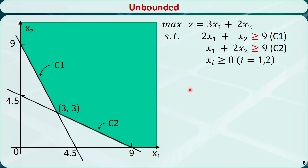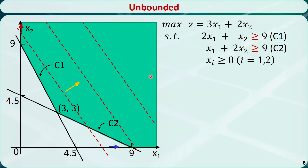In this example, the constraints are changed so they both have a greater-than-or-equal-to sign, so the feasible region changes to an unbounded area. Moving the line in parallel towards the top right corner, we find that no matter how far we move the line, we will always intersect with the feasible region. That means the z value can be arbitrarily large, so the problem is unbounded.